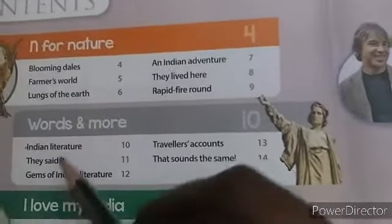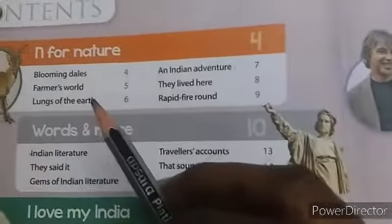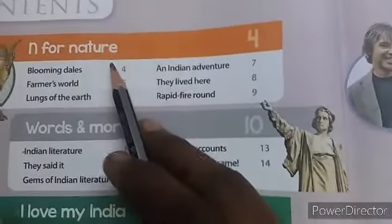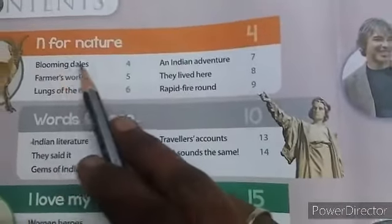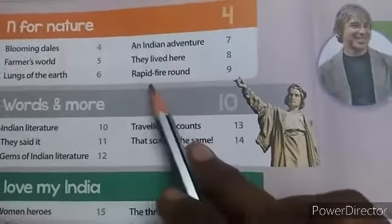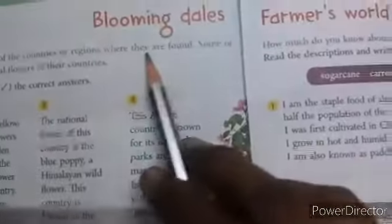Dear students, today in 8th grade GK, we are going to see about End for Nature. In that: Blooming Dales, Farmer's World, Lungs of the Earth, and Indian Adventure — where they lived here — and a Rapid Fire Round. Let's move to the first sub-section, Blooming Dales, given in page number 4.